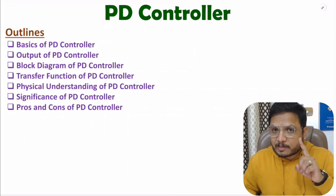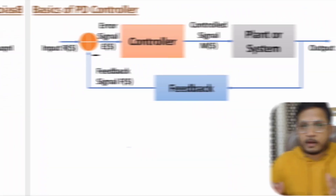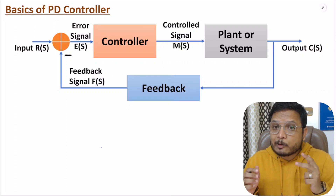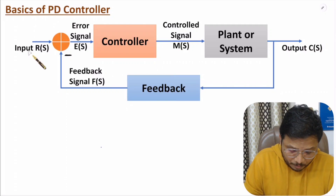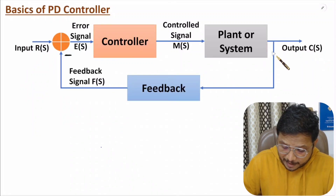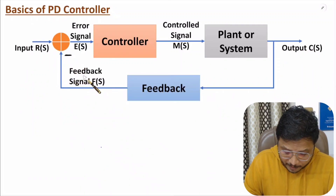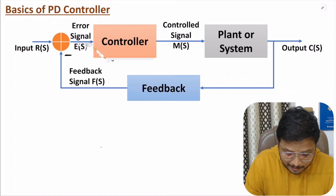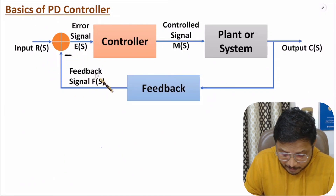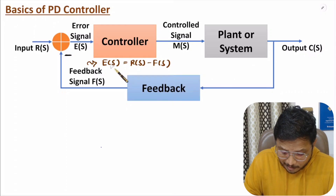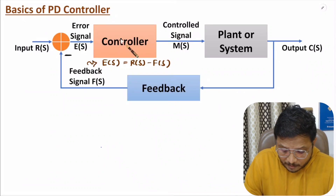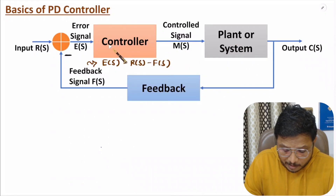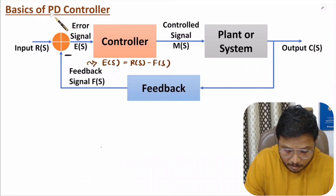Let us start with the basics of the PD controller. Here we have a standard closed-loop control system where input is R(s) and output is C(s). We have a negative feedback system where the feedback signal is F(s), and an adder generating the error signal E(s) = R(s) - F(s). That error signal is given to the controller, which generates the controlled signal to the plant. Our controller here is the PD controller — proportional derivative controller.